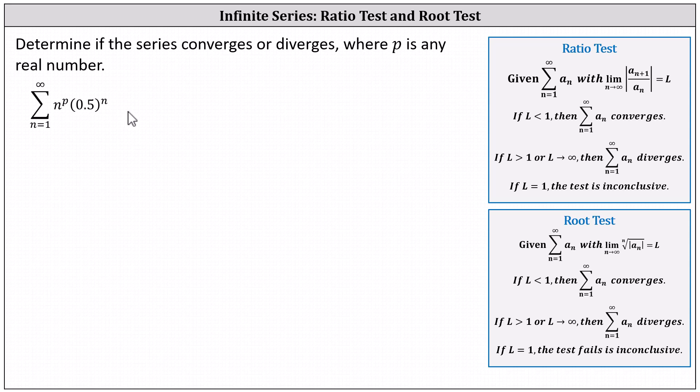Let's apply the ratio test. It states given the sum from n equals 1 to infinity of a sub n with the limit as n approaches infinity of the absolute value of a sub n plus 1 divided by a sub n equal to l.